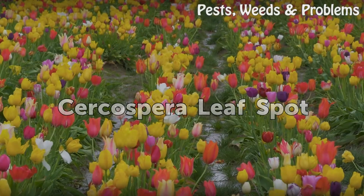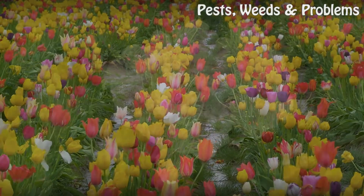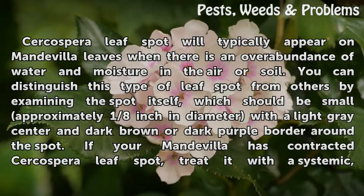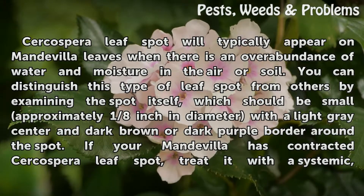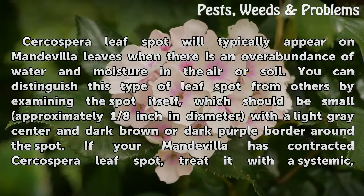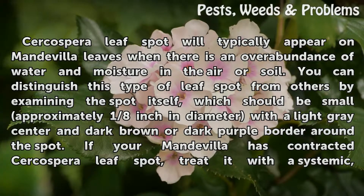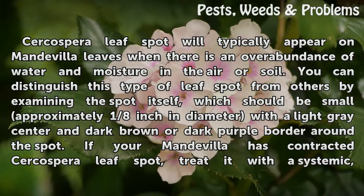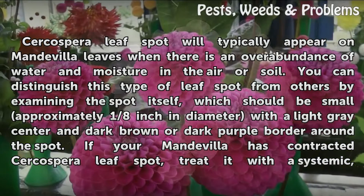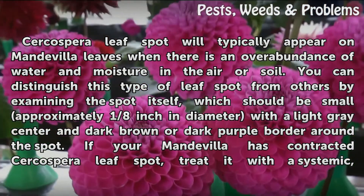Circus per leaf spot will typically appear on Mandevilla leaves when there is an overabundance of water and moisture in the air or soil. You can distinguish this type of leaf spot from others by examining the spot itself, which should be small, approximately 1/8 inch in diameter, with a light gray center and dark brown or dark purple border around the spot.